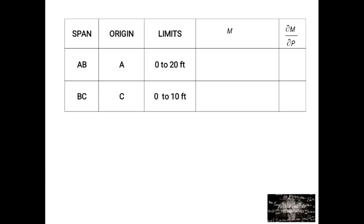Summary table: for span AB, origin at A, limits 0 to 20 feet, M equals 20X minus X cubed over 40, and partial derivative of M with respect to P equals X over 3. For span BC, origin at C, limits 0 to 10 feet, M equals 25X minus X cubed over 20, and partial derivative of M with respect to P equals 2X over 3.